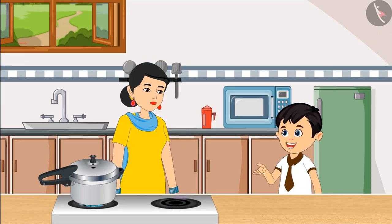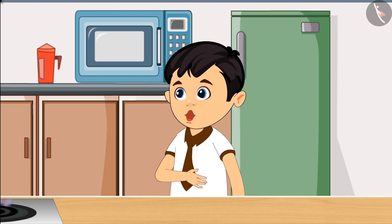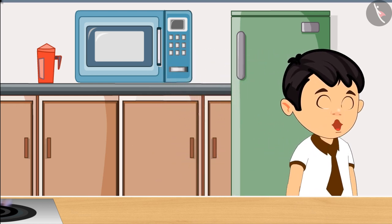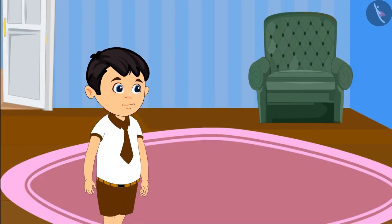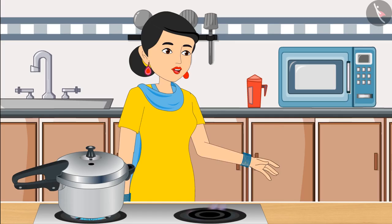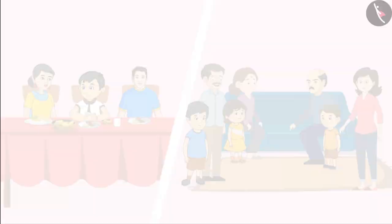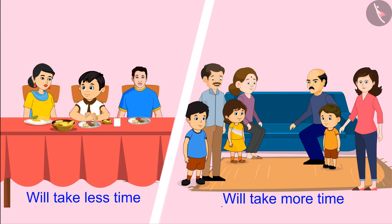Chotu said, "Okay Mom, I got it. I will have some biscuits first and then we'll go to play with Tito for some time. But you call me as soon as the food is ready, Mom, okay?" His mother replied, "Yes, sure, Chotu." So children, did you see that it will take less time to cook for three people and more time will be required to cook for more people?